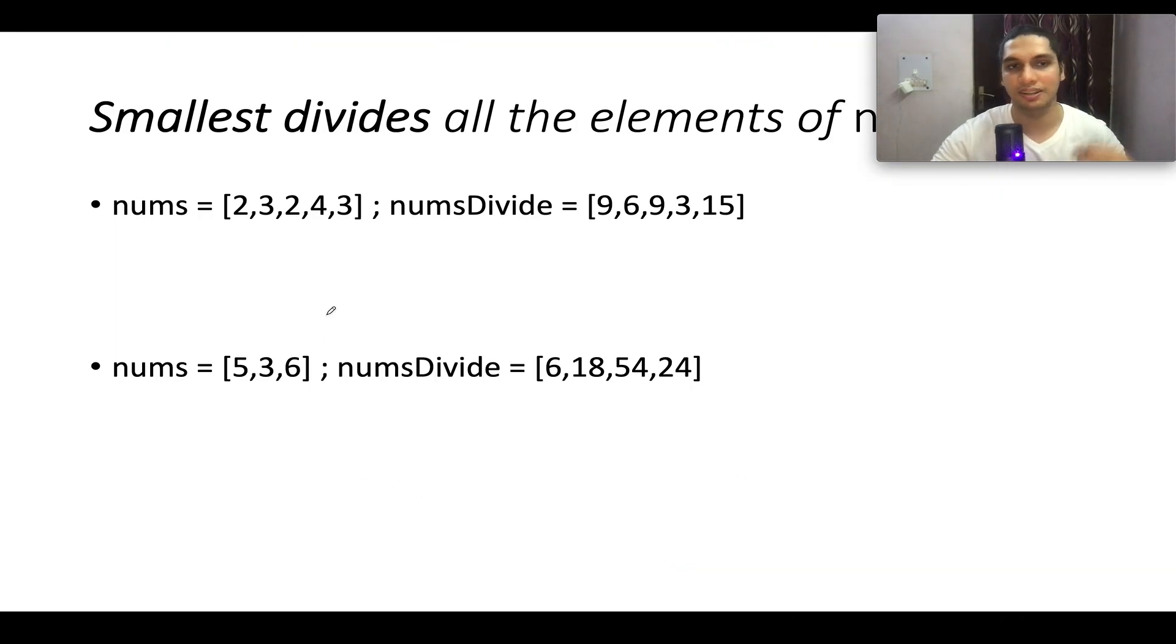Now let's get started with understanding the example. The biggest hint that was specified in the question is to identify that particular element which divides all the elements of nums divide array. That element would be either a factor of the GCD of all the elements of nums divide or the GCD itself.